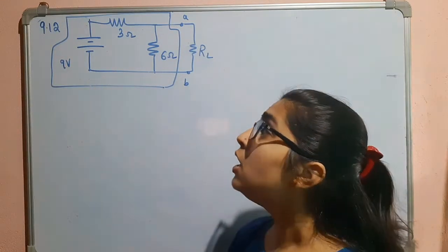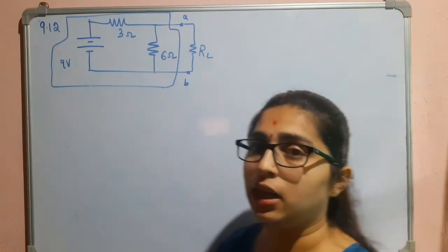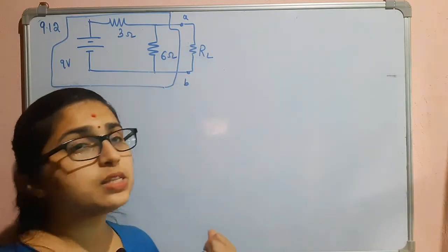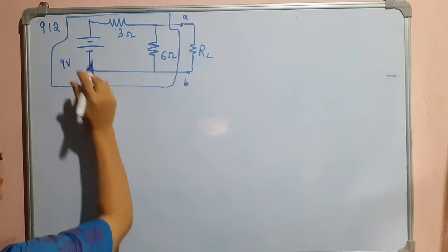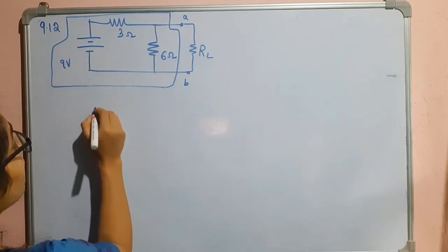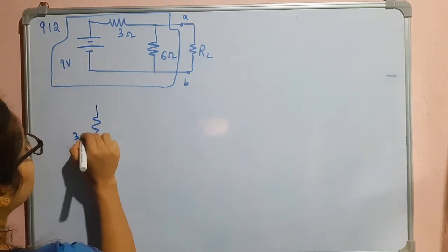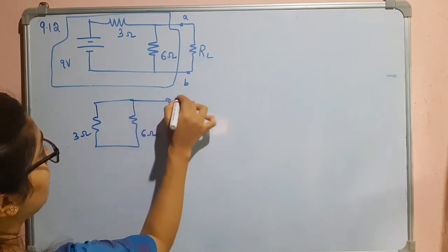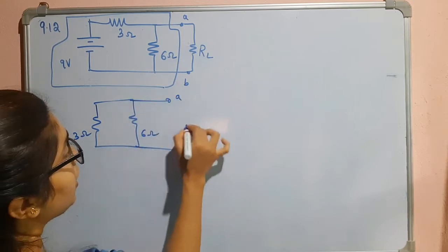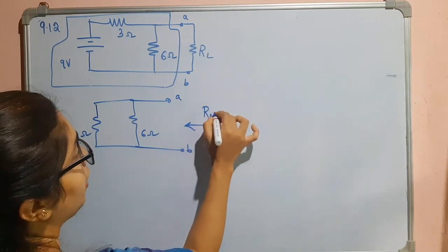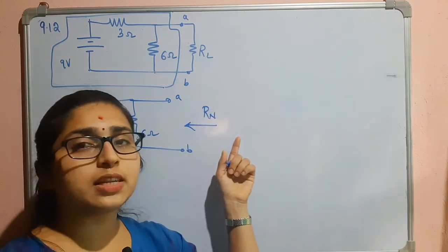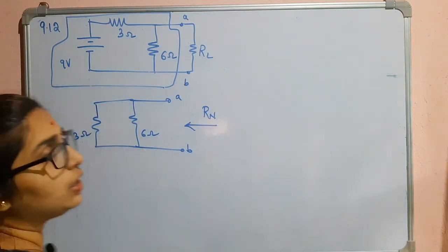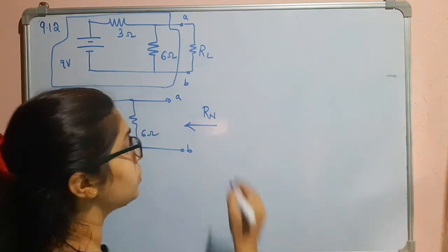To find Rn in this case you have to deactivate the sources, which means you short the 9 volt voltage source. At that point you will be getting 3 ohm in parallel with 6 ohm across the marked terminals a and b. You are finding Rn, the Norton's resistance. 3 ohm parallel with 6 ohm gives you 2 ohms, so Rn equals 2 ohms.